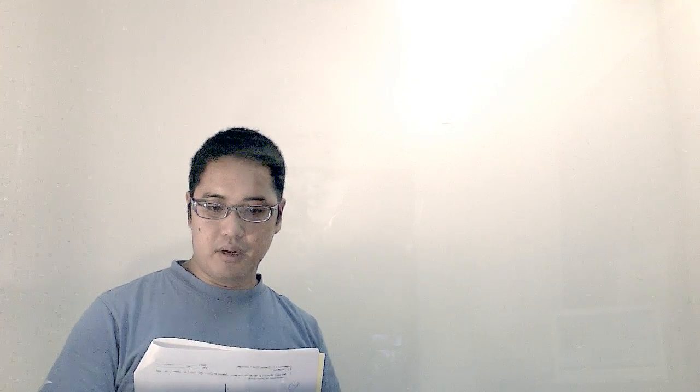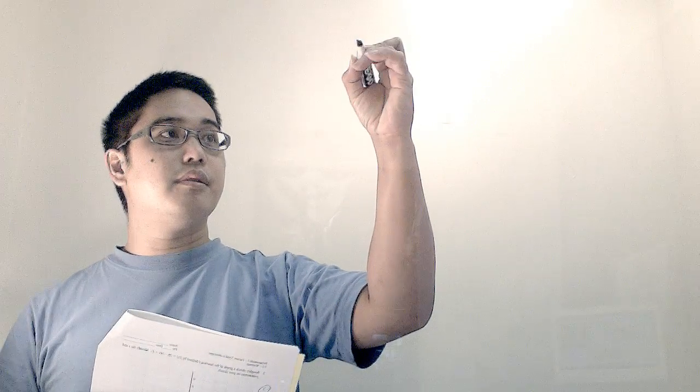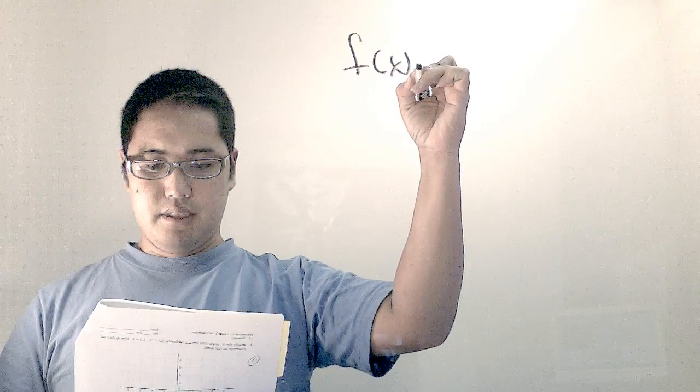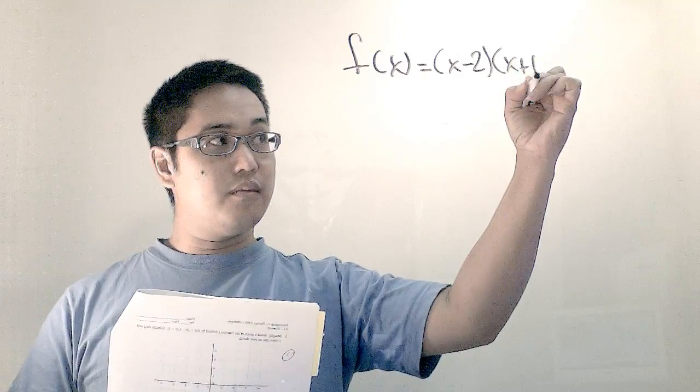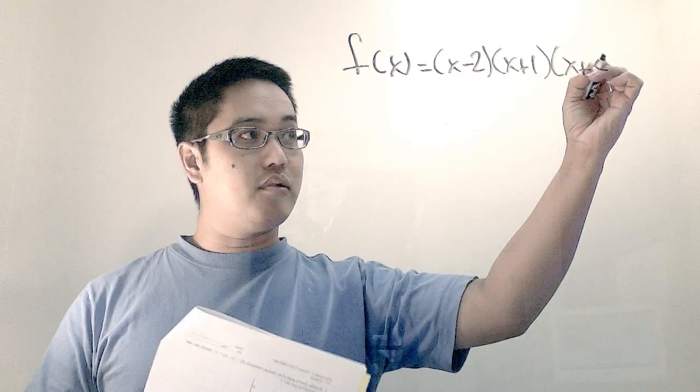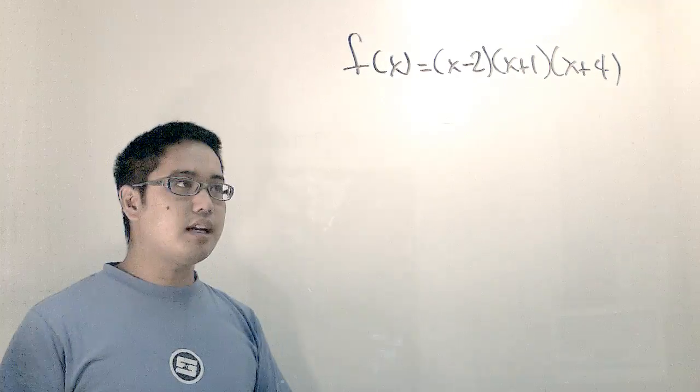Sketch your graph of the polynomial below, and here we go. f of x is equal to x minus 2, x plus 1, x plus 4. So check this out.